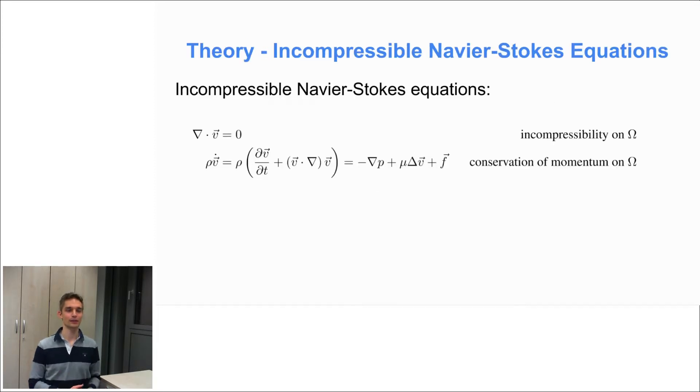So now I'll give you some theoretical background and I'll start with the incompressible Navier-Stokes equations which describe the dynamics of the velocity field v and the pressure field p within a domain omega. These equations consist of two partial differential equations. The first one ensures incompressibility of the fluid so it states that the divergence of the velocity field has to be zero. And the second equation ensures conservation of momentum and it states that the change of the momentum of the fluid has to be equal to the sum of forces acting on that fluid.